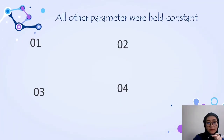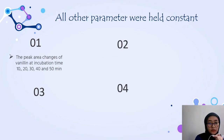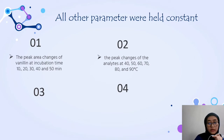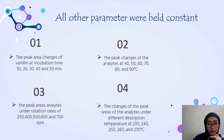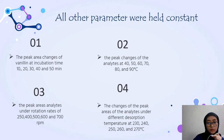When all other parameters were held constant, the following were studied: the peak area change of vanillin at incubation times of 10, 20, 30, 40, and 50 minutes; the peak area change of analytes at temperatures of 40, 50, 60, 70, 80, and 90 degrees Celsius; the peak area of analytes under rotation rates of 250, 400, 500, 600, and 700 rpm; and the change of peak area of analytes under different desorption temperatures of 230, 240, 250, 260, and 270 degrees Celsius.